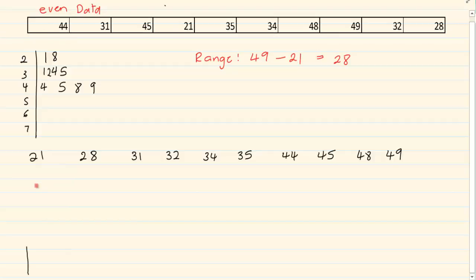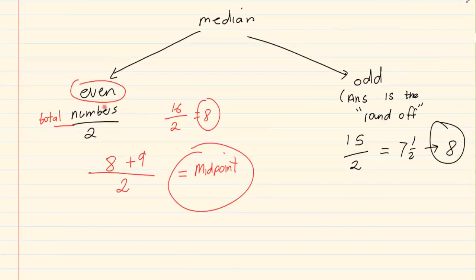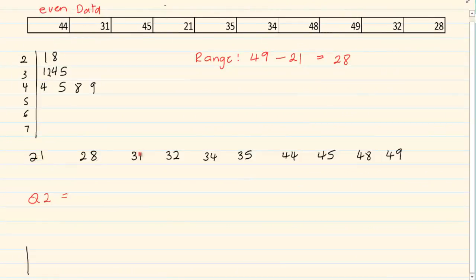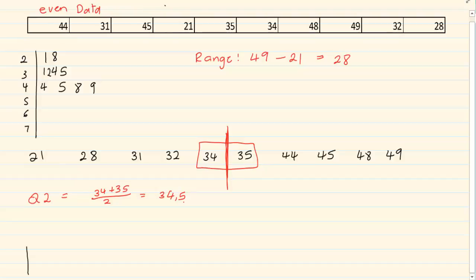Now, how do we get Q2? Always start with Q2 — it is the middle. We have 10 terms, so 10 divided by 2 is 5. From your previous work, you know that if it is an even number, you take that term and the next term and divide by 2. So we take the 5th and 6th terms: 34 plus 35 divided by 2, which gives 34.5. The answer is 34.5 — it is in the middle of the data and it is not part of the data.